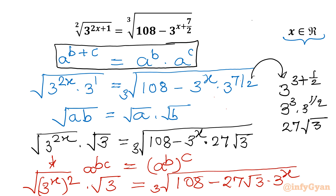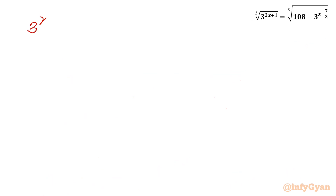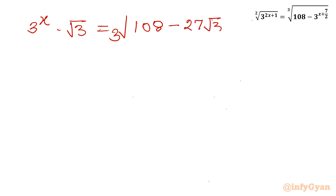Now I will use substitution, but before that we can cancel the square root and the square. So the equation becomes 3 power x times root 3, equal to cube root of 108 minus 27 root 3 times 3 power x.